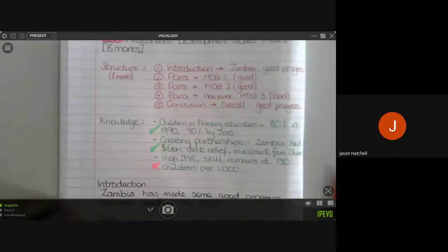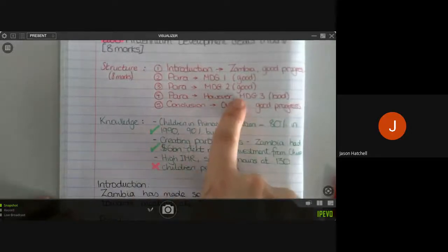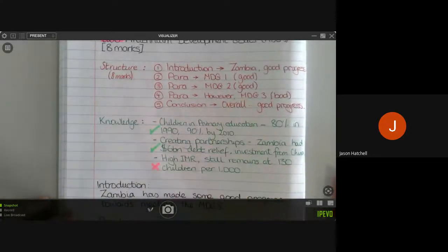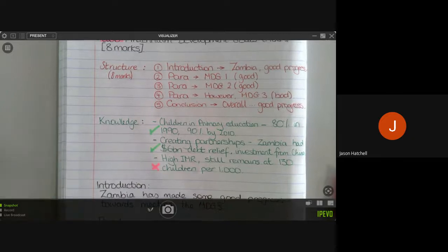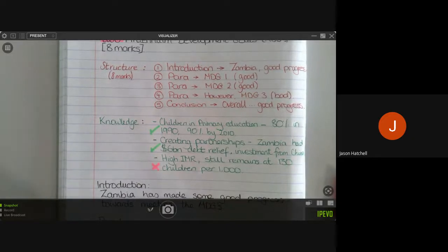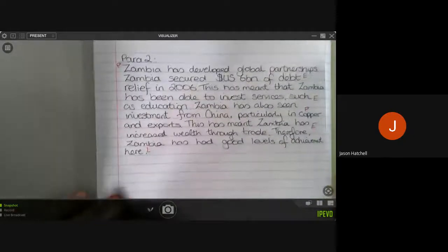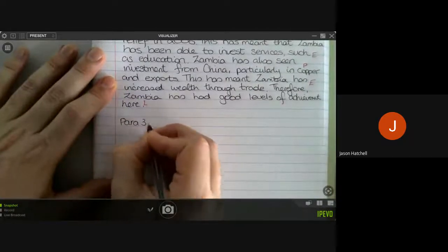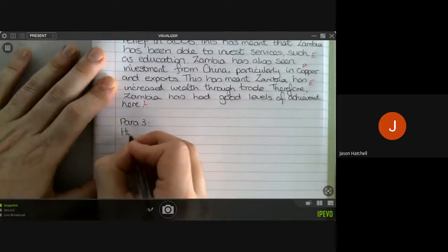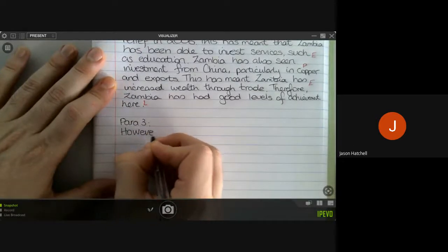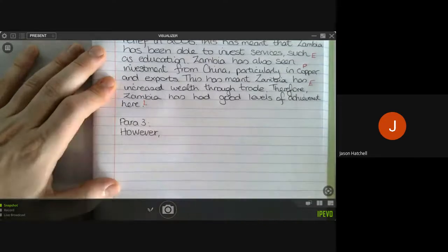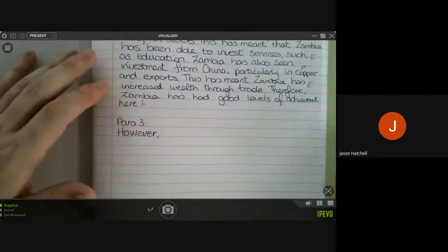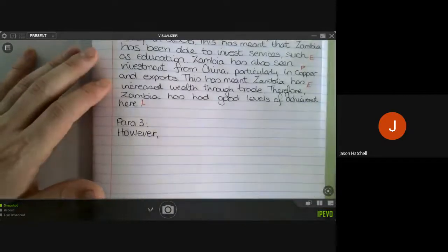Now, if you remember, we'll go back to what we said at the start. We need to make sure that we also have a however paragraph. So we're going to have the next paragraph as the however, and then we will finish up with a conclusion. So our next paragraph is going to say however, and we're going to argue here that Zambia hasn't made good progress everywhere. However, Zambia has had some weaker progress.